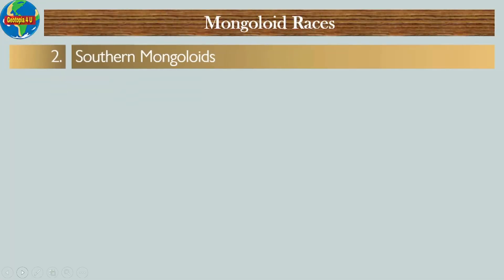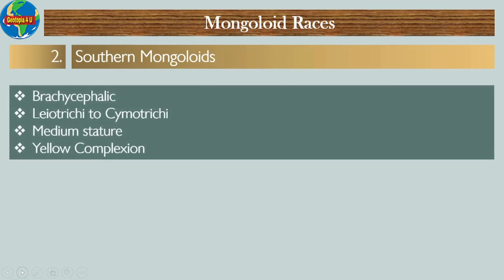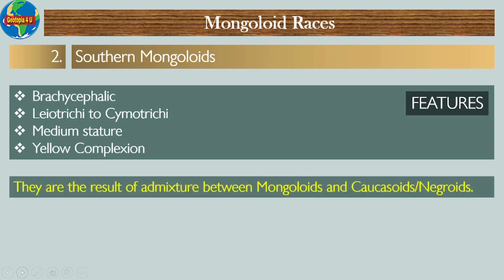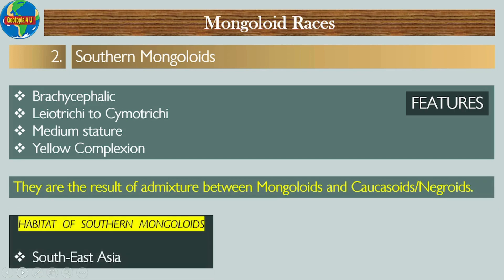Number two: Southern Mongoloids. Their features include: they are brachycephalic; they have leiotrichous to cymotrichous hair; they have a medium stature; and they have a yellowish complexion. They are the result of admixture between Mongoloids and Caucasoids or Negroids. The habitat of Southern Mongoloids is Southeast Asia.